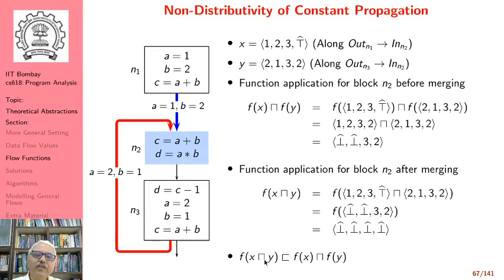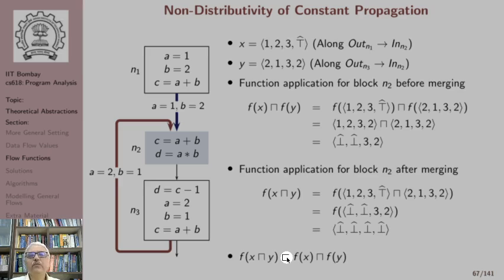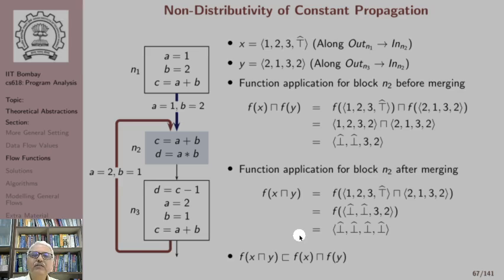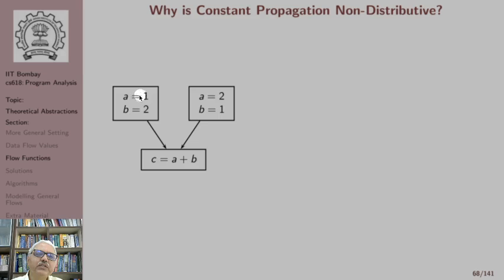We do not have equality here, indicating that constant propagation flow functions can be non-distributive. There can be distributive flow functions in constant propagation as well, and that is left as an exercise. On this slide there are four examples where the flow functions are distributive. But we want to understand why constant propagation is non-distributive — what is it that causes this over-approximation?